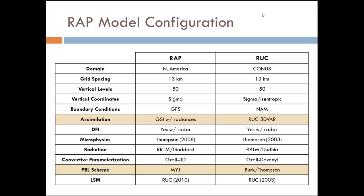Here are some of the updates. I've put the RAP on the left and the RUC on the right, just to show some of the updates from the former RUC. Most things are pretty similar — same grid spacing, the domain's a little bit bigger. The biggest changes I've highlighted are the assimilation, which was updated and changed pretty significantly, and the planetary boundary layer scheme, which was also a pretty significant change.